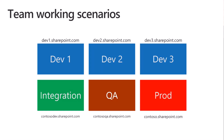Let's also say you have an integration environment — maybe a separate dev tenant or a separate site where you test things. In this case I'm using contosodev.sharepoint.com. Maybe you have separate environments for QA and production. If you're sharing code and putting it in source control, you don't want to be changing this every single time.